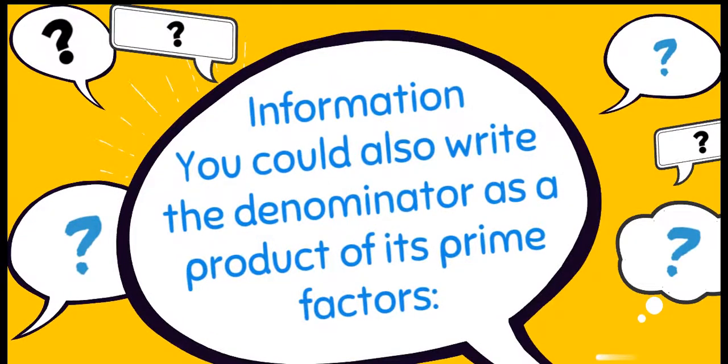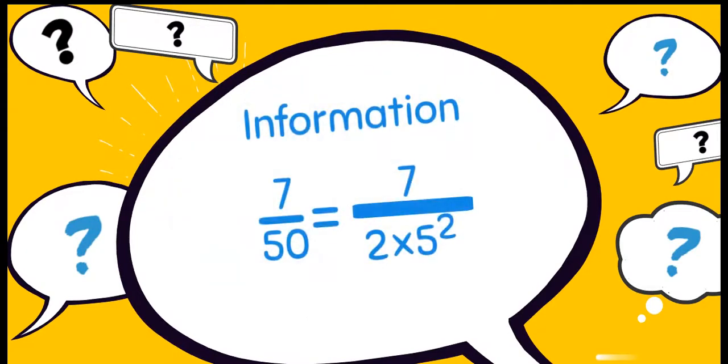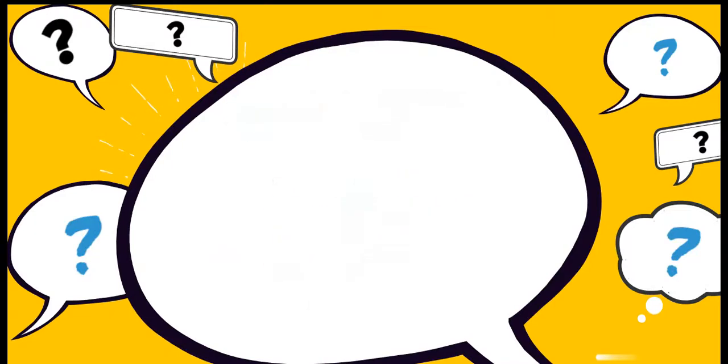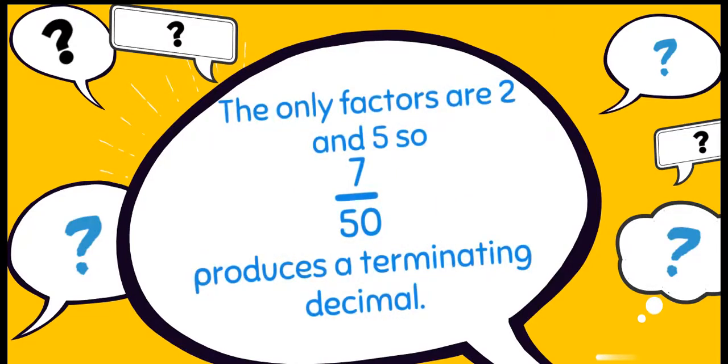Further information: you could also write the denominator as a product of its prime factors. 7 over 50 is equivalent to 7 over 2 times 5 squared. The only factors are 2 and 5, so 7 over 50 produces a terminating decimal.